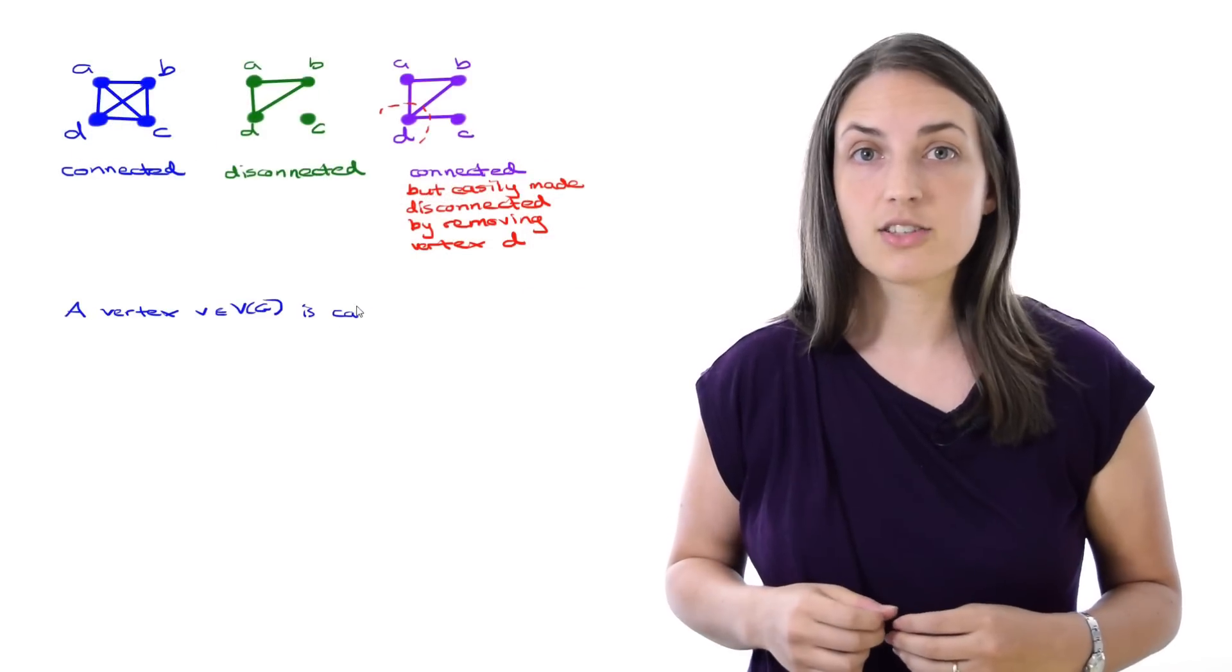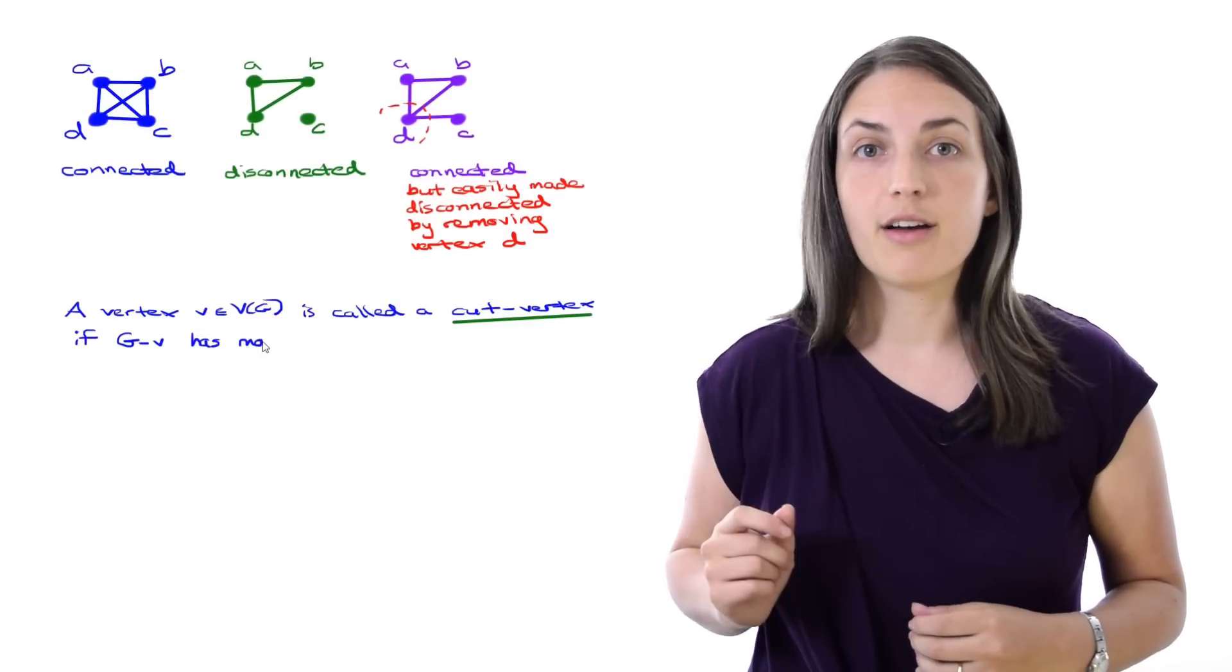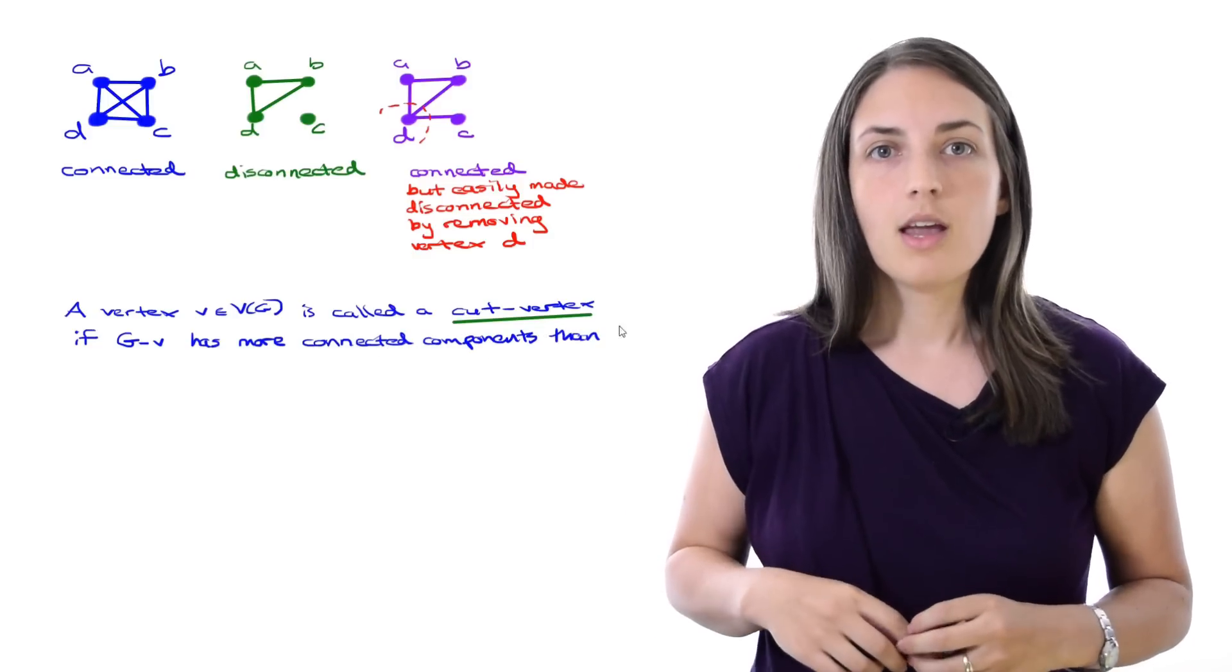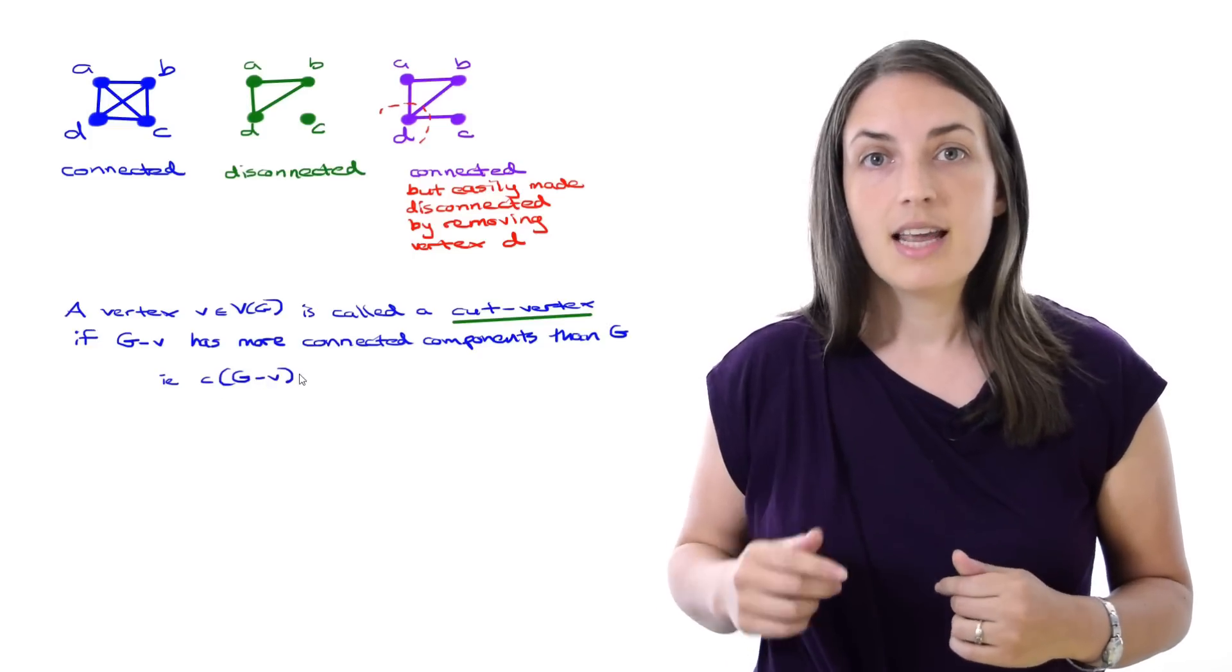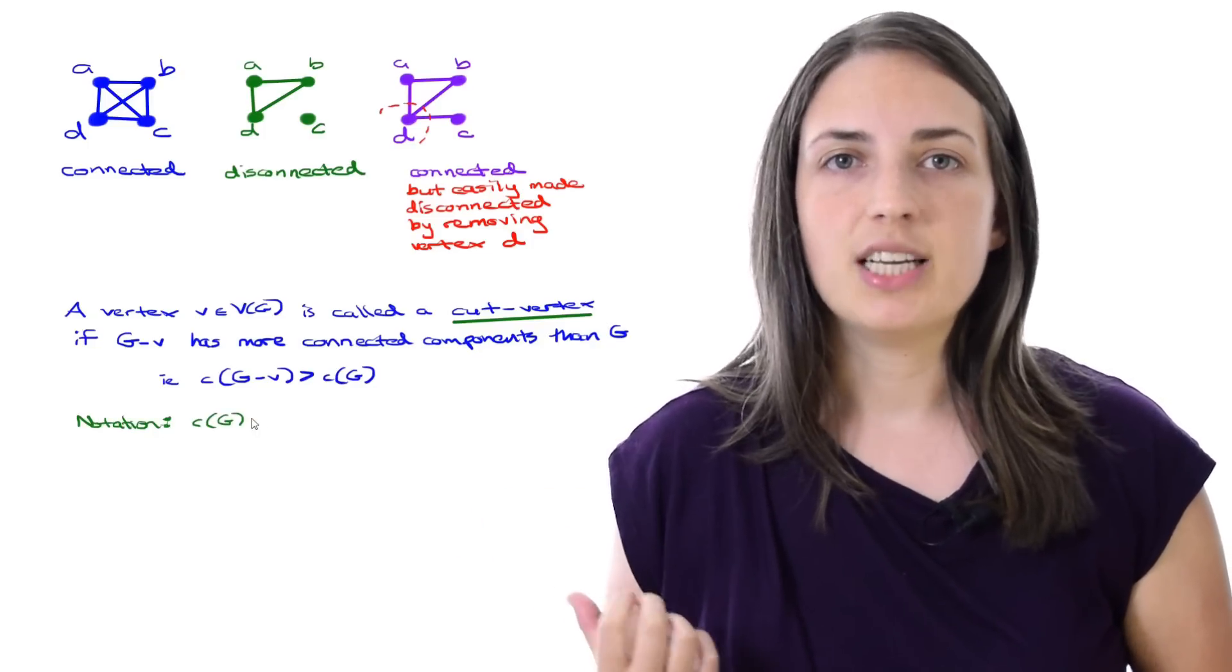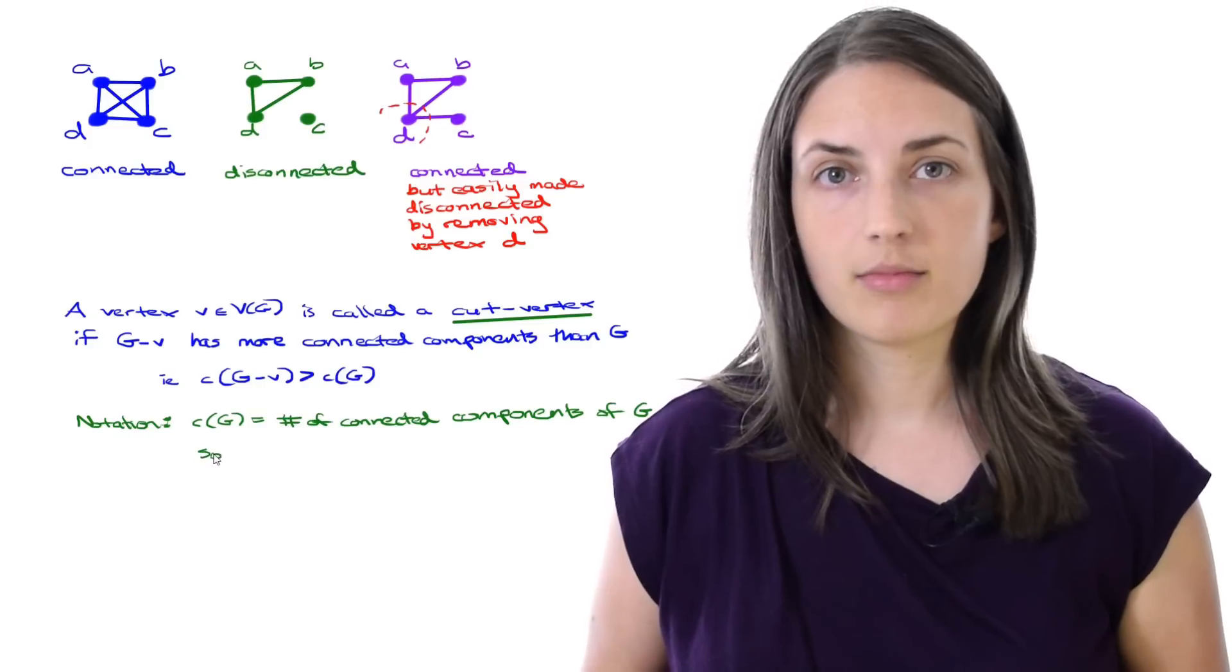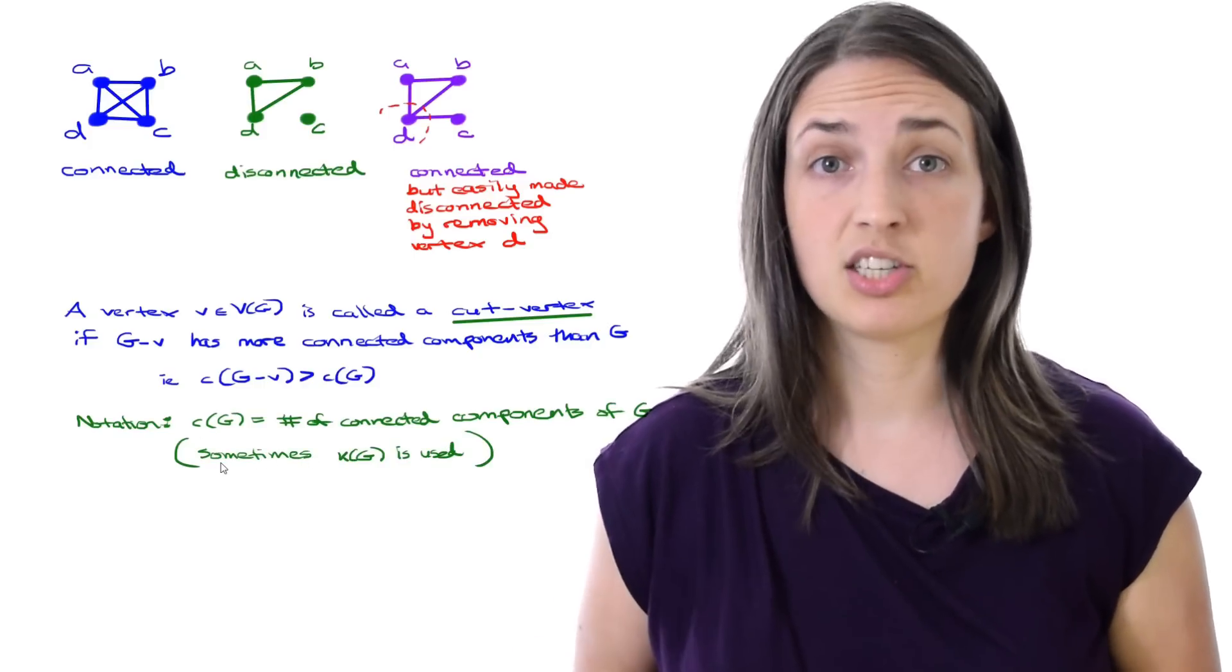A vertex in a graph is called a cut vertex if the graph without that vertex has more components than it did before. That is, the number of connected components of G minus V is bigger than the number of connected components of G. The notation C of G represents the number of connected components of the graph G. You should notice that sometimes the notation K of G is used to denote the same thing.